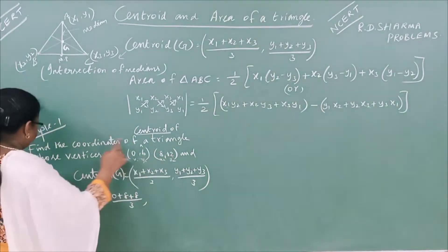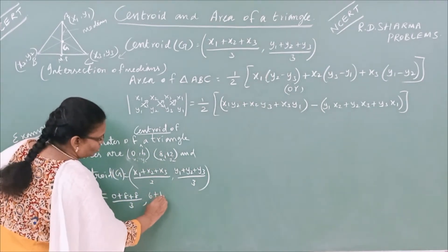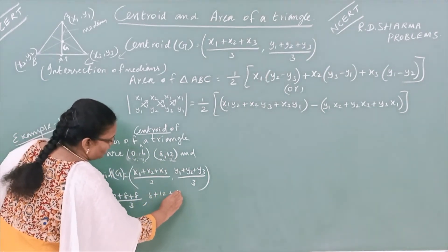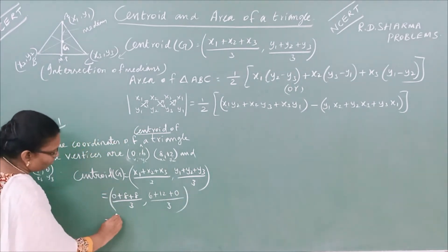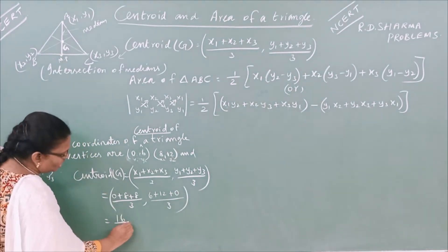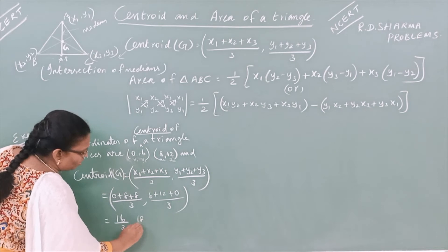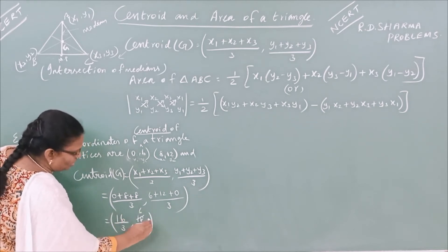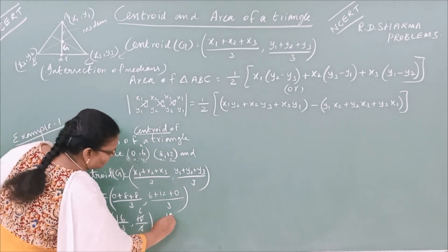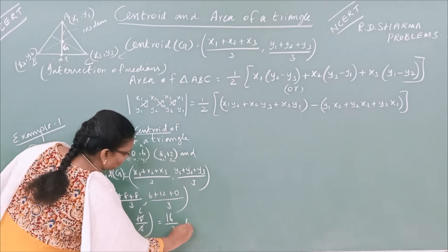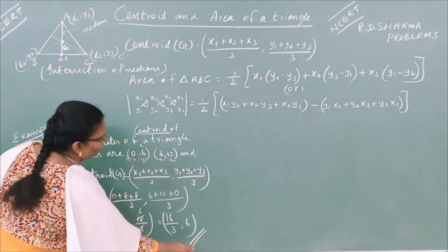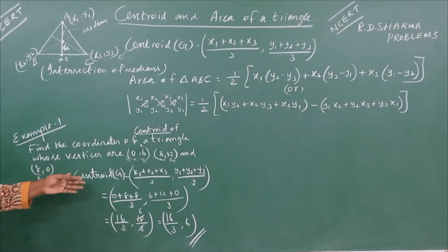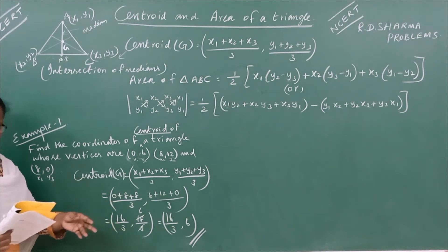6 plus 12, 6 plus 12 plus 0 by 3. So your answer is 16 by 3, 18 by 3. So your answer is 16 by 3, 6. This must be a 1-mark formula question.